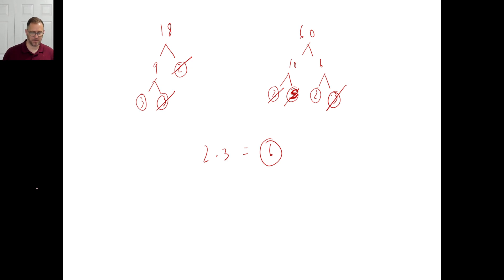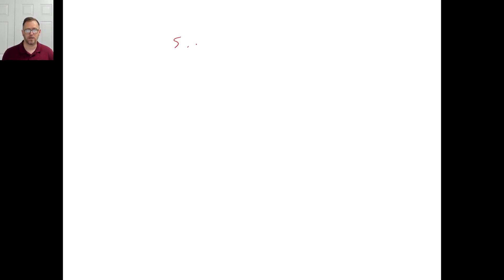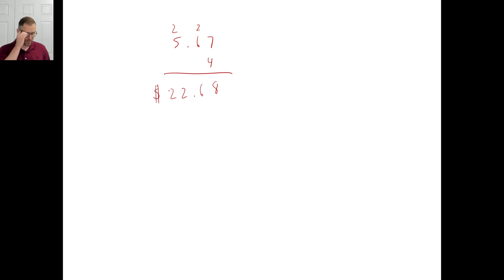Let's look at problem C before I collapse of exhaustion and old age. Inflation caused the price of everything to increase. The price of an item after inflation was 4 times the price before inflation. If an item cost $567 before inflation, what did it cost after inflation? So all we need to do is multiply this by 4. 7 times 4 is 28, 4 times 6 is 24 plus 2 is 26, and that will be $2,268.